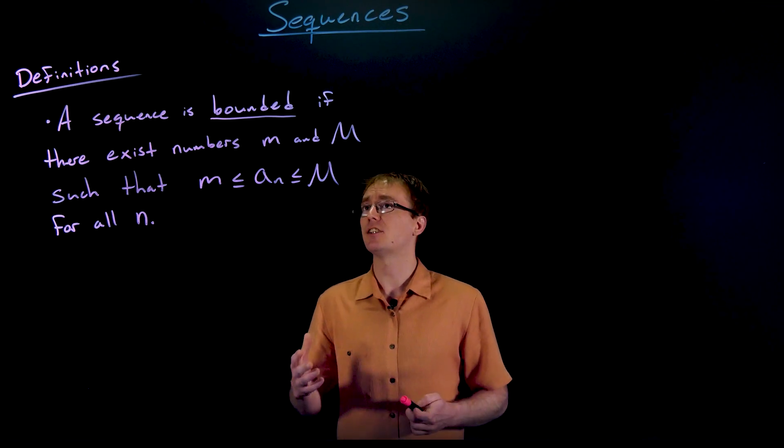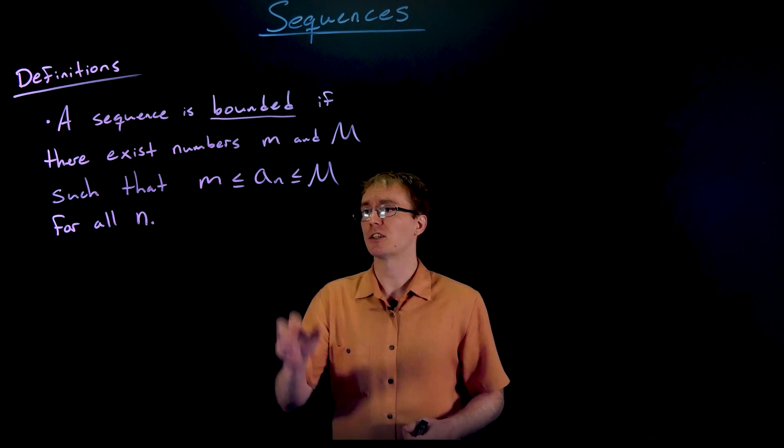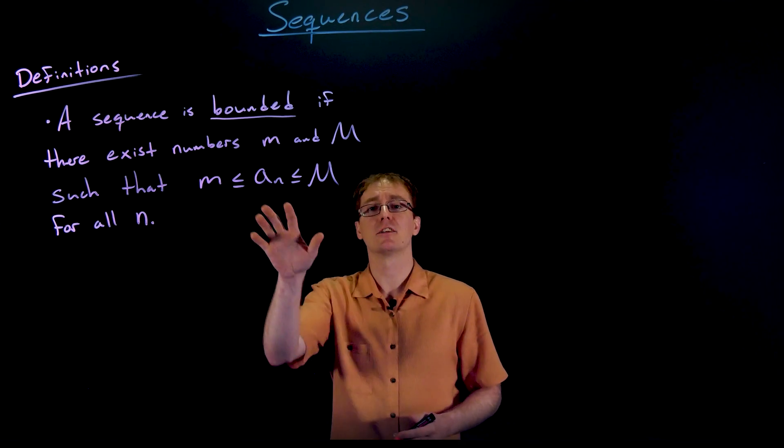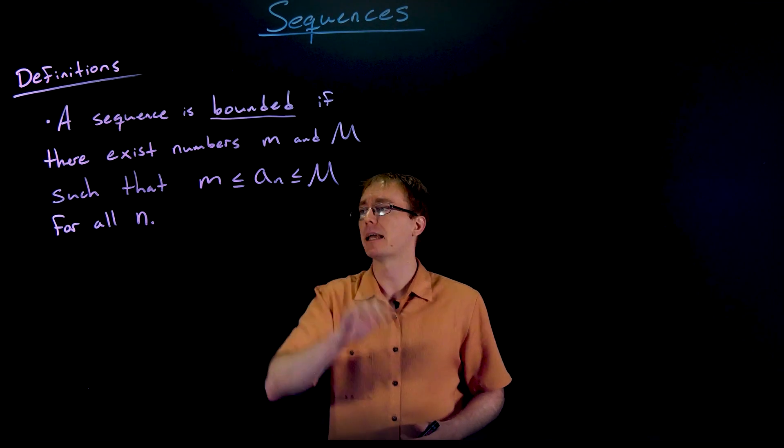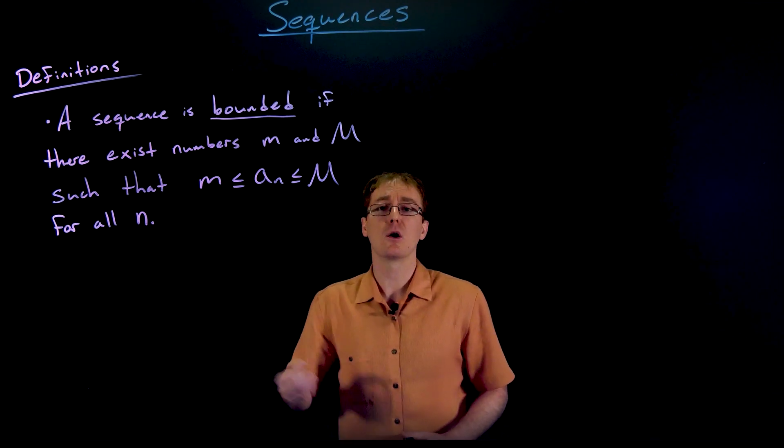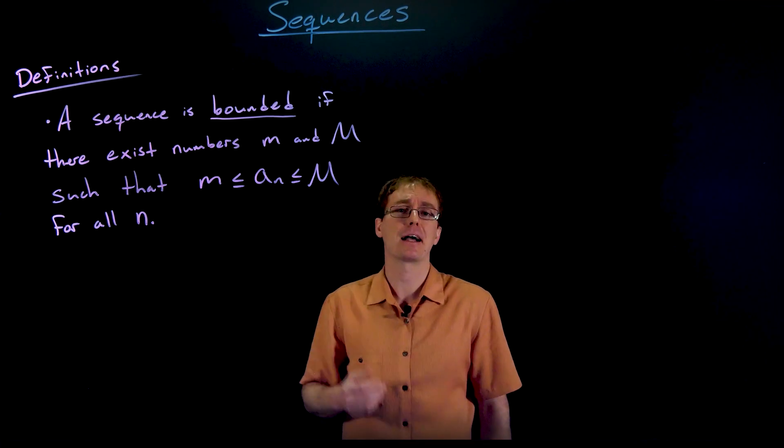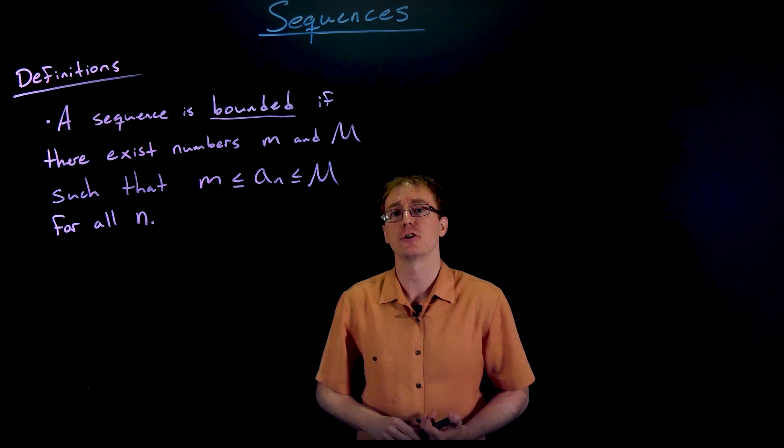We say that a sequence is bounded if there exist two numbers, little m and big M, such that the terms in our sequence can be squeezed in between little m and big M. We can think of little m as a minimum value or lower bound for the terms in our sequence, and capital M as a maximum or upper bound for the terms in our sequence.